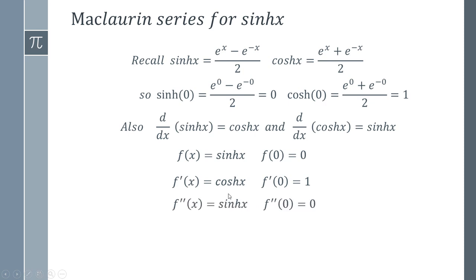Then we take the derivative again to get our second derivative and end up with sinh. We evaluate it and we get zero again. Then we take the derivative yet again, so we've got cosh, we evaluate that and we get one just like we did there.